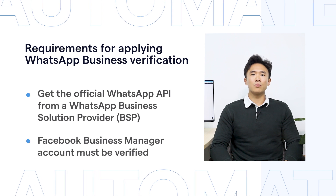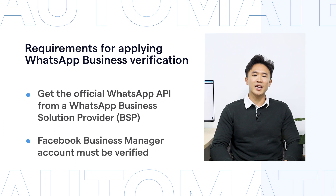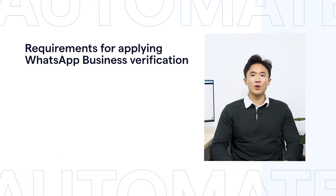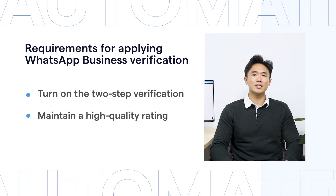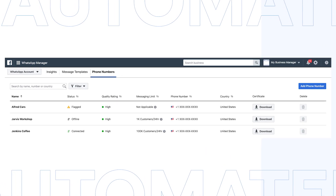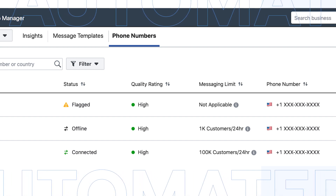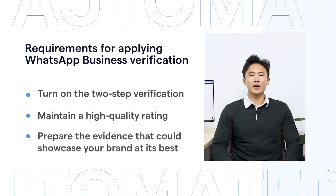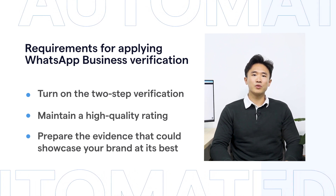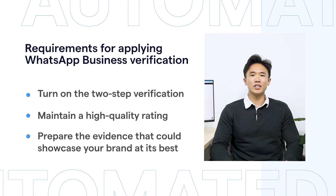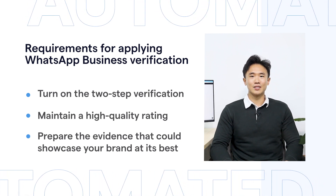Your Facebook Business Manager account must be verified. Make sure the name of your Facebook Business Manager is the same as your company name. You have to turn on two-factor step verification. Maintain a high quality rating — you can find the quality rating below the phone numbers tab in your Meta WhatsApp Manager; make sure it's in green. Prepare evidence that could showcase your brand as notable and reputable, such as being well presented in media, having a Facebook page with at least 10,000 likes, and a decent business website.